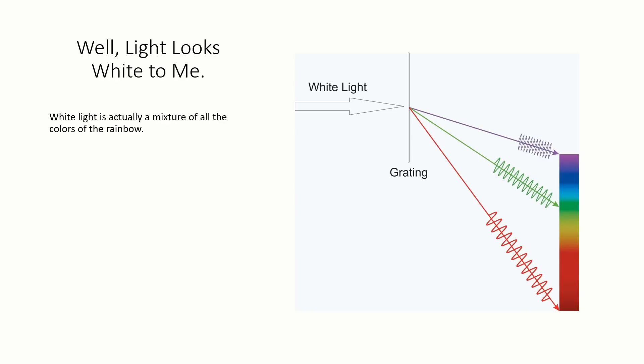Sunlight striking a blank sheet of paper looks like it has no color of its own, and is often called white light. It's actually a blend of all colors, and these can be separated from the white light by using a prism or diffraction grating.